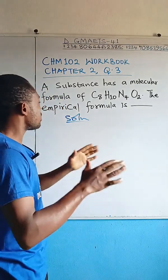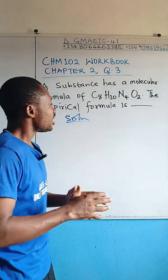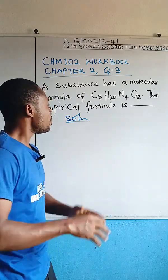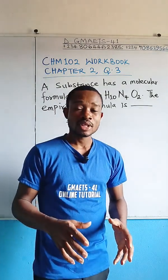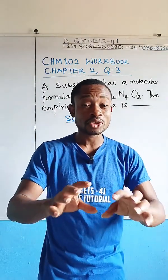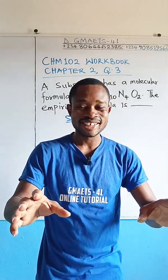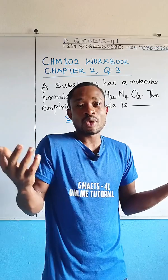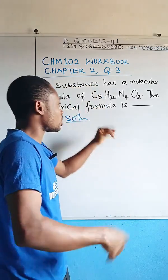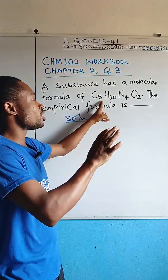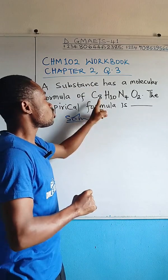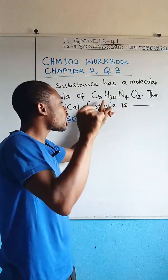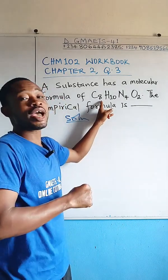A substance has a molecular formula of C8H10N4O2. Find the empirical formula. As I said, this is a funny but potentially tricky question — it's actually very simple to answer without doing much work. What you have to do to get the empirical formula is factorize the highest common factor.